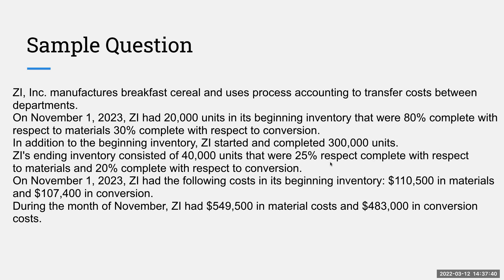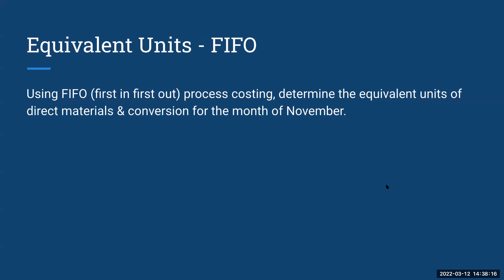Here's our sample question. We manufacture breakfast cereal, and we use process accounting to transfer costs between departments. On November 1st, 2023, we had 20,000 units in beginning inventory that were 80% complete with respect to materials and 30% complete with respect to conversion. These percentages, unlike weighted average, become extremely important for FIFO. In addition to the beginning inventory, I started and completed 300,000 units. My ending inventory consisted of 40,000 units that were 25% complete with respect to materials and 20% complete with respect to conversion. Using FIFO process costing, determine the equivalent units of direct materials and conversion for the month of November.